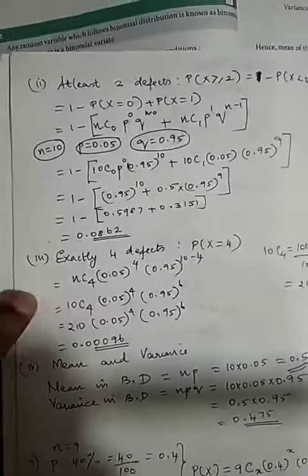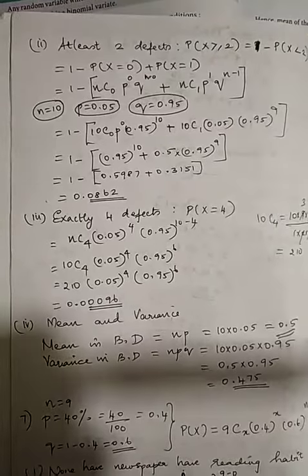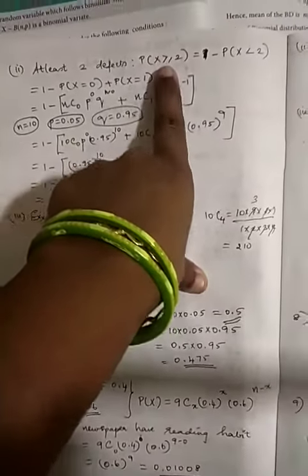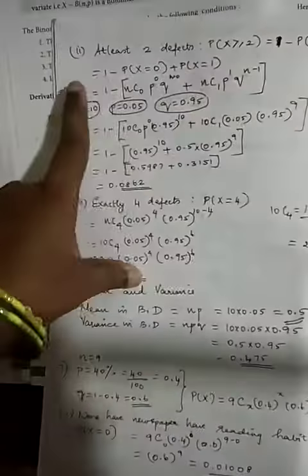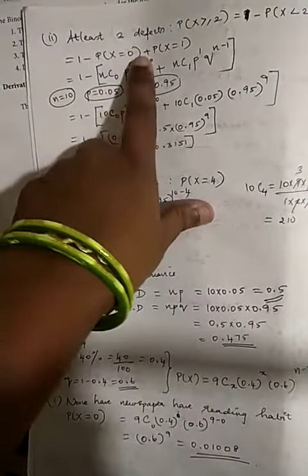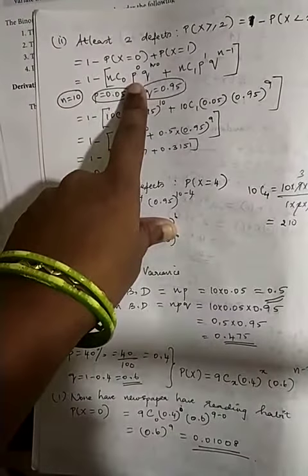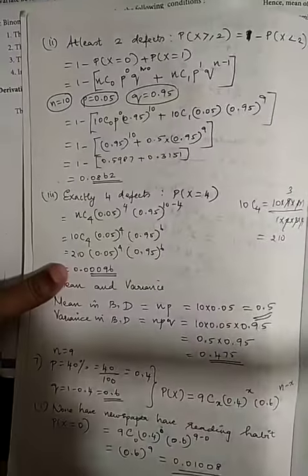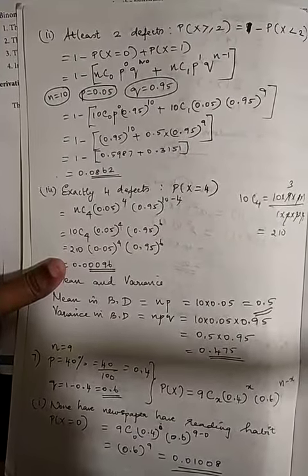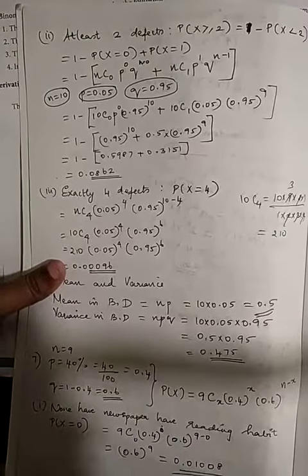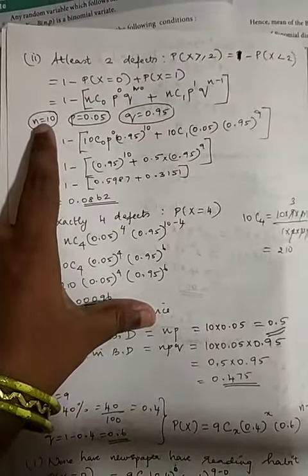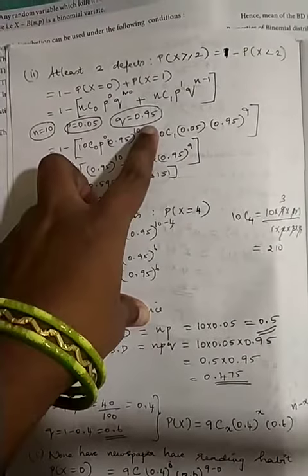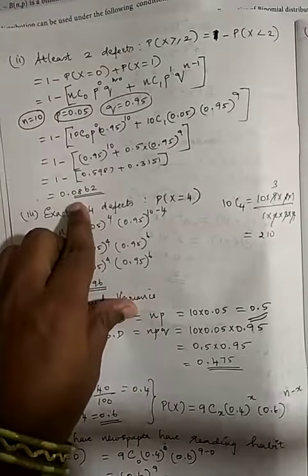The next part asks for at least 2 defects, meaning x ≥ 2. This can be found by 1 − P(X < 2) = 1 − [P(X=0) + P(X=1)]. We substitute n = 10, p = 0.05, q = 0.95 into the formula: 10C0·(0.05)^0·(0.95)^10 + 10C1·(0.05)^1·(0.95)^9, then subtract from 1.